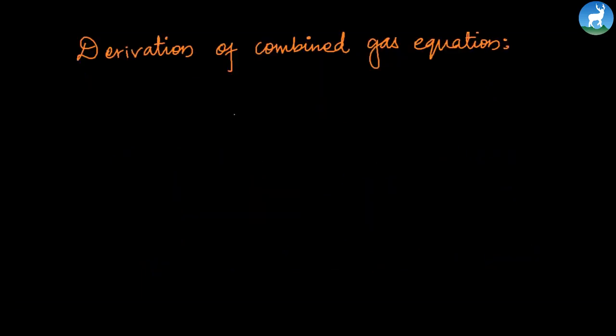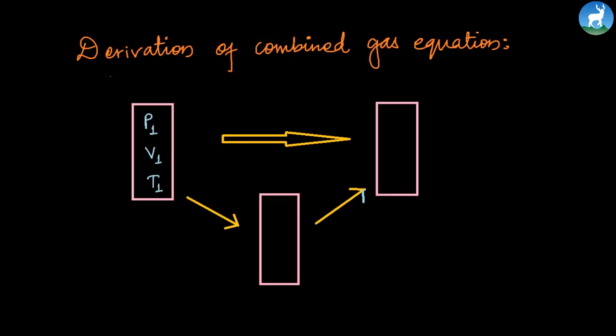Now, how can we derive the combined gas equation? First, we consider the initial state. Suppose in the initial state we have pressure P1, volume V1, and temperature T1. In the final state we have pressure P2, volume V2, and temperature T2. To go from initial to final state, we first need to pass through an intermediate state.